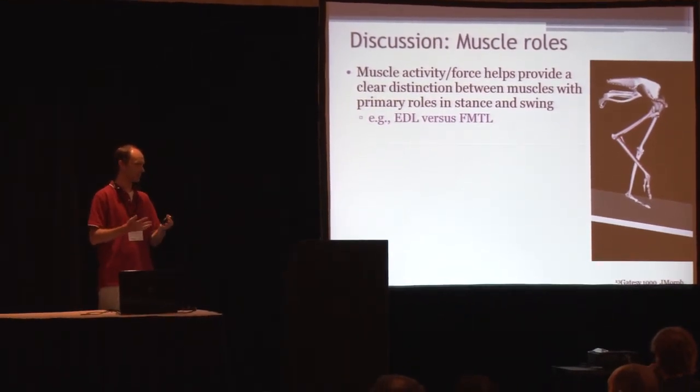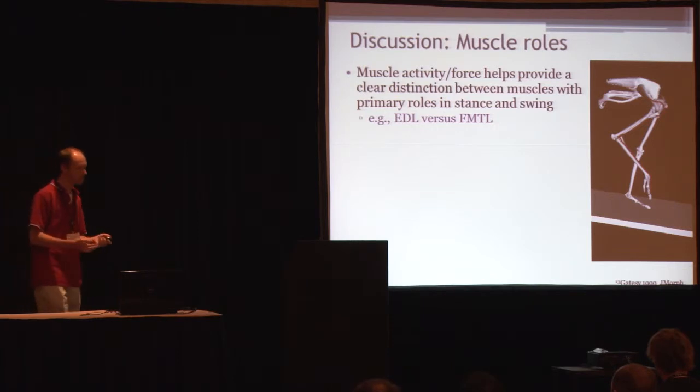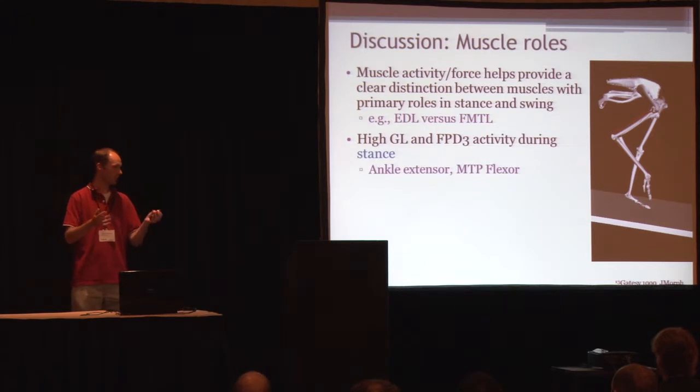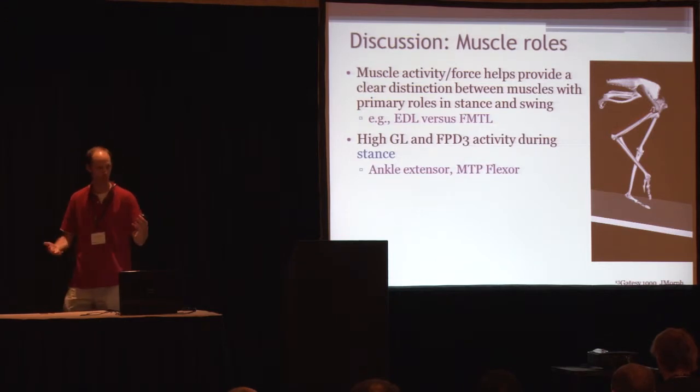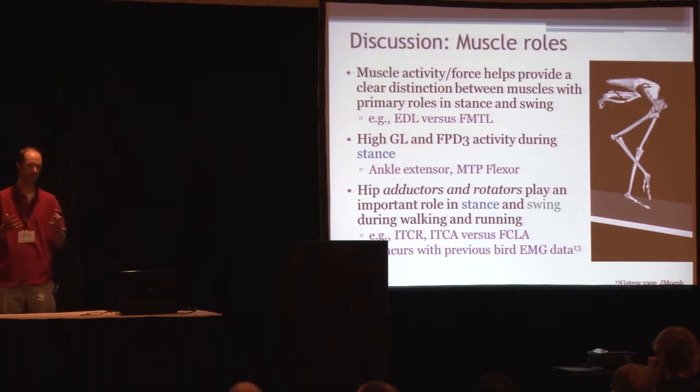Which is very different from humans. We don't really use our hip rotators as much. As I mentioned, muscle activity and force provides a clear distinction between the extensor muscles in stance and swing. There was a lot of high activity in our ankle extensors and our digital flexors as we expected, especially during running. These muscles are designed in an ostrich, they have very long tendons for energy storage and return, and seem to indicate that they're using springs to save energy as they're running. And as I mentioned, hip adductors and rotators seem to play an important role in stance and swing during walking and running.